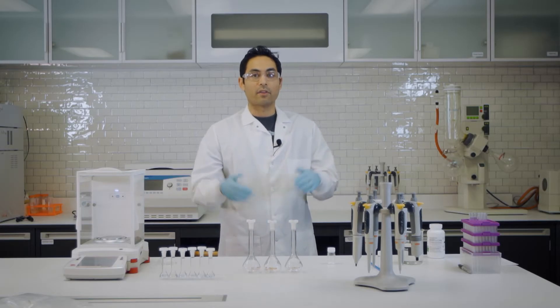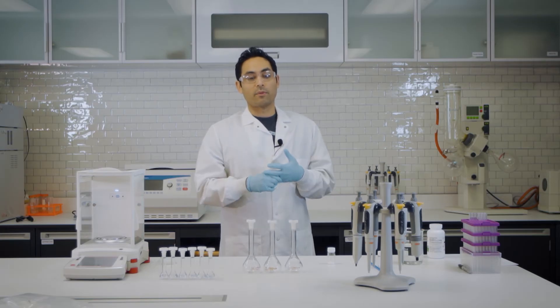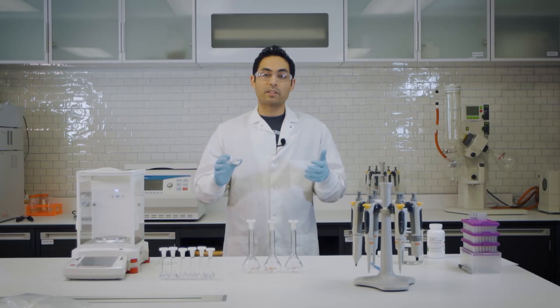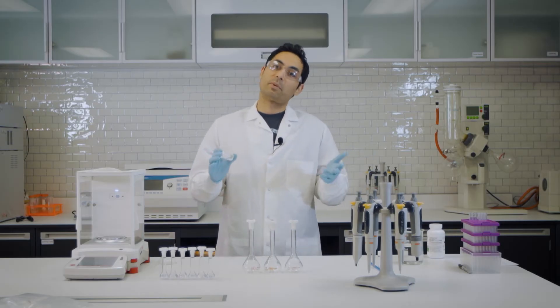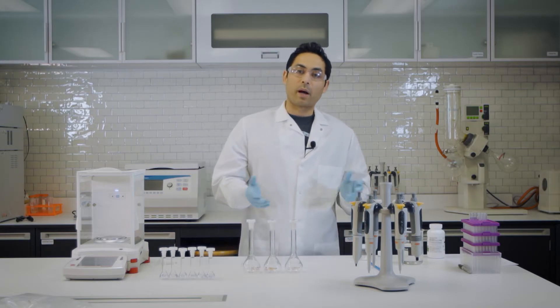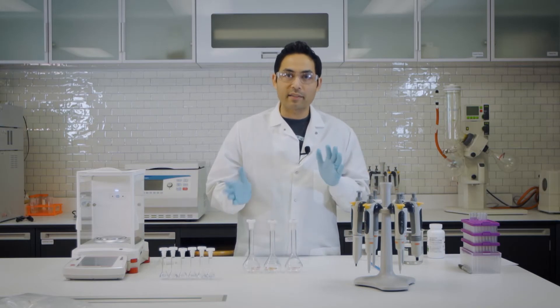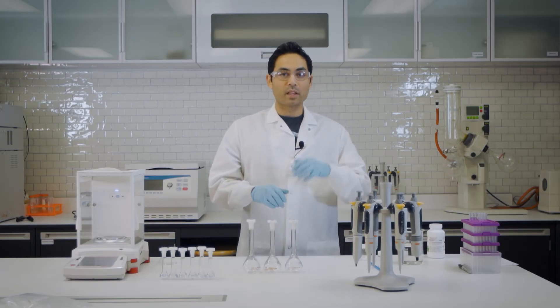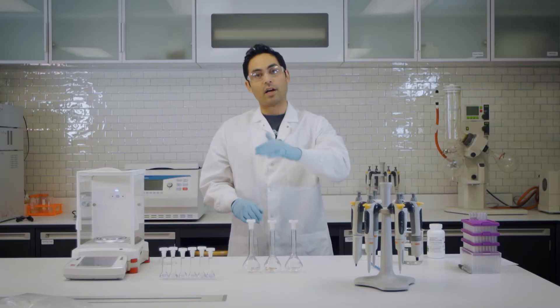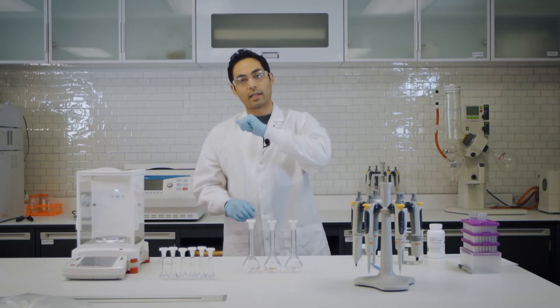So how do we build a cal curve? The first thing we want to start with our NEAT standard. NEAT pretty much means pure. A pure sample would be a million parts per million and you usually go to a stock solution. Our stock solution would probably be somewhere around 2000 ppm. And from there it'll be really easy to dilute out to your 200 and 100 and so on.